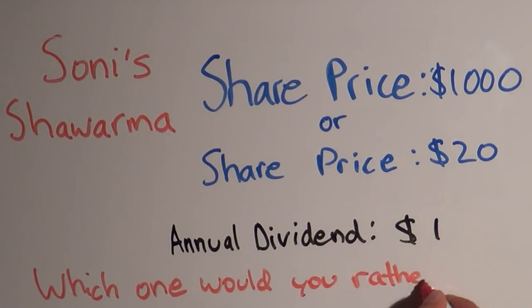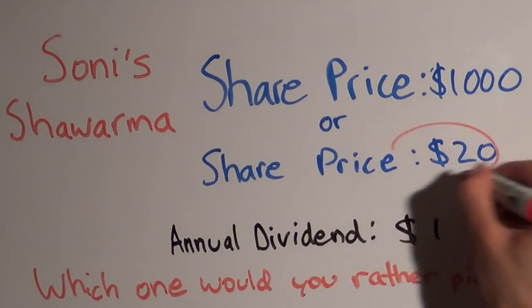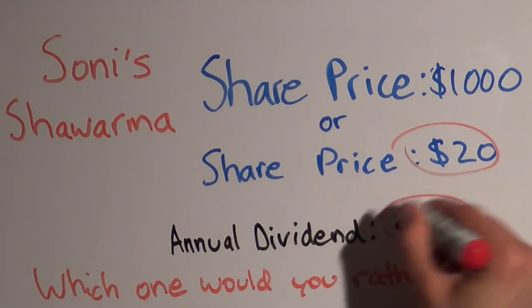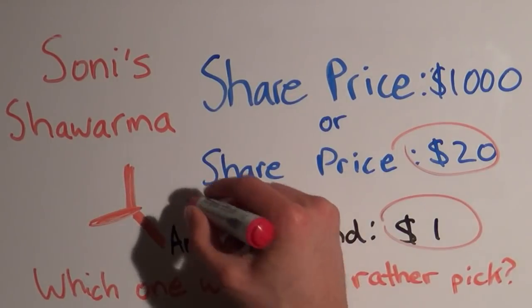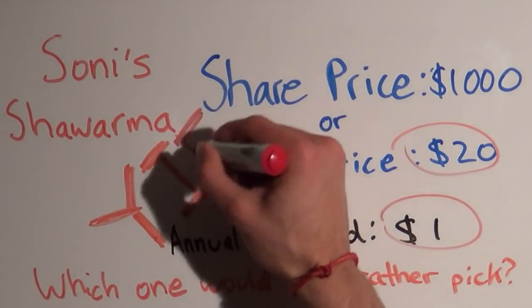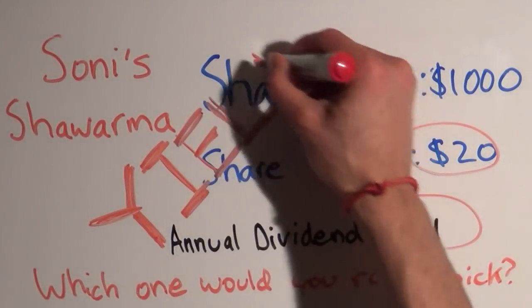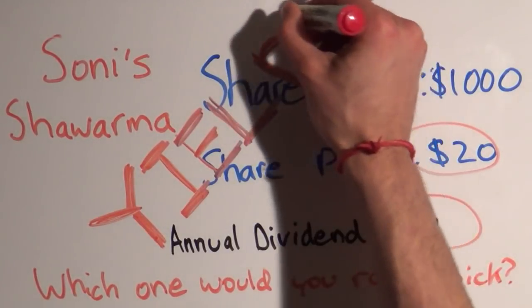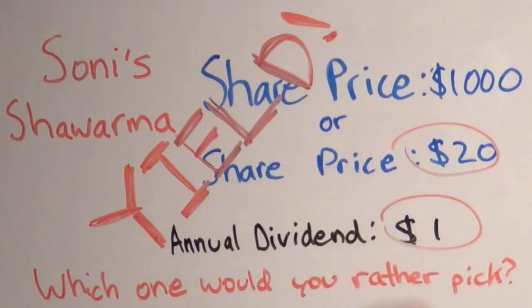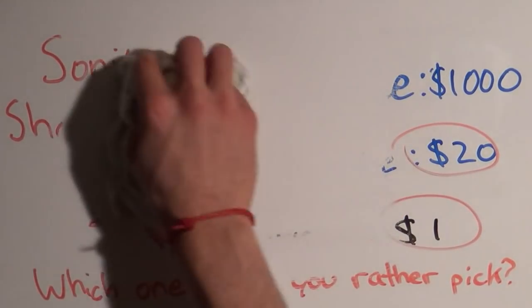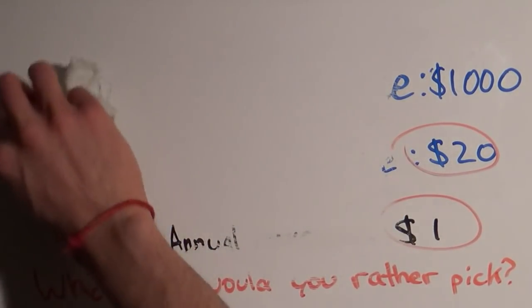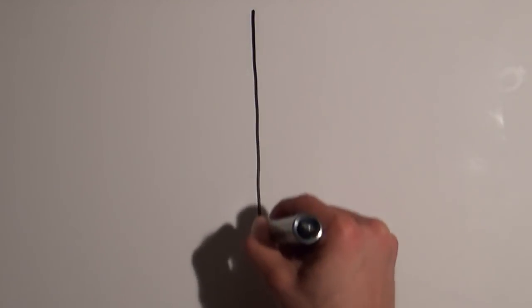Which one would you rather pick? I would pick the twenty dollar share that pays me one dollar instead of the thousand dollar share that pays me one dollar. Why? Because it has a greater yield. Yield is simply the dividends we get relative to the price of the share. That's not a dictionary definition, it's my definition for this case. So now let's calculate the yield of these two options.